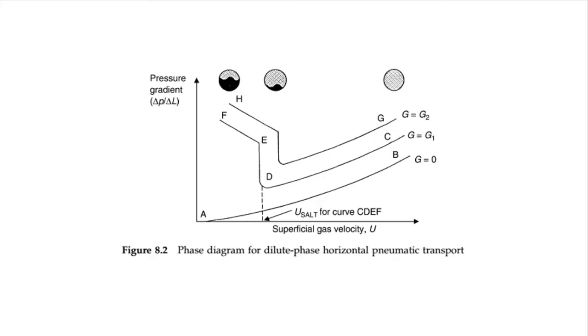This diagram shows the relationship between the pressure drop and the gas velocity for a horizontal pipe instead of a vertical pipe. At point C, the suspension is dilute, and the turbulent flow helps prevent particles from settling out.